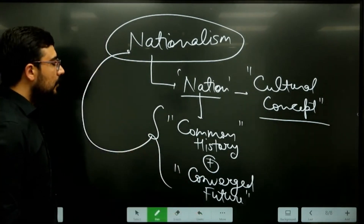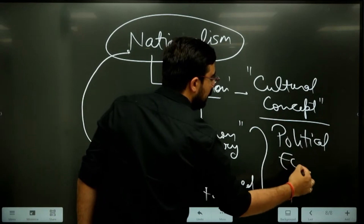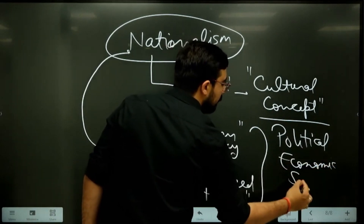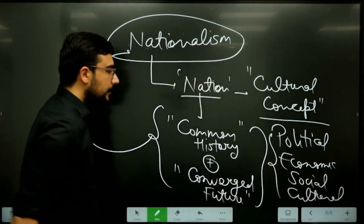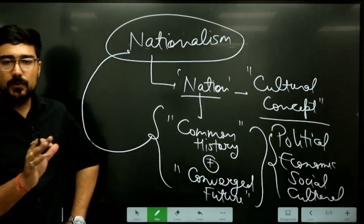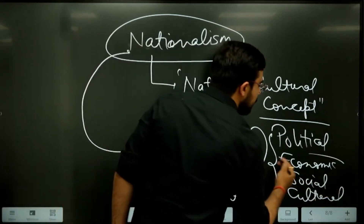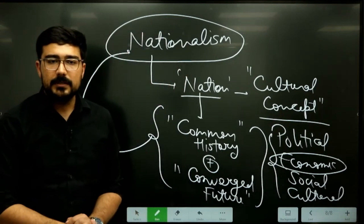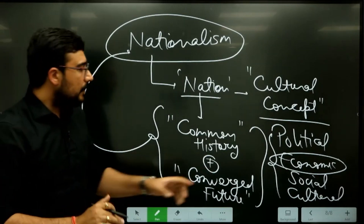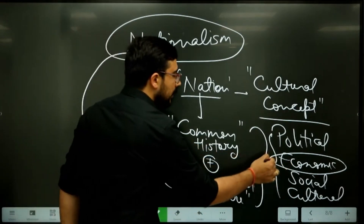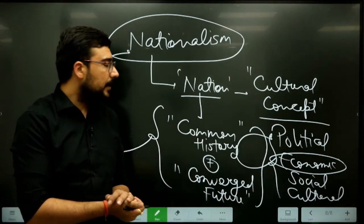Nationalism could be of multiple types — it could be political, economical, social, cultural, or religious. If we see the case of India, initially we see the phase of socio-cultural nationalism, which was part of the reform movements. Then side by side we see the rise of economic nationalism. Why economic nationalism? Because all Indians were getting exploited by the British.